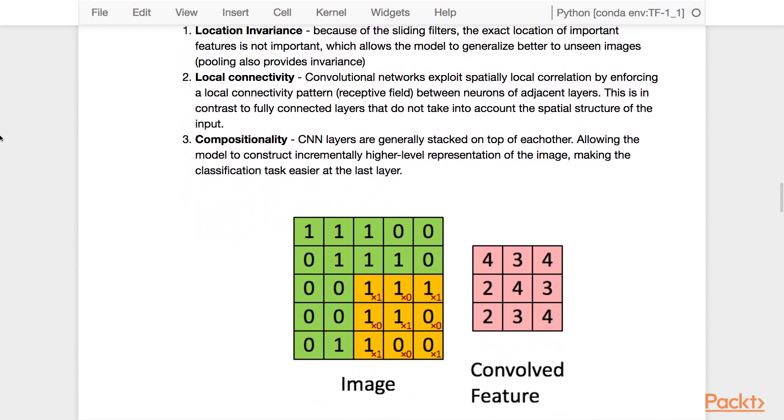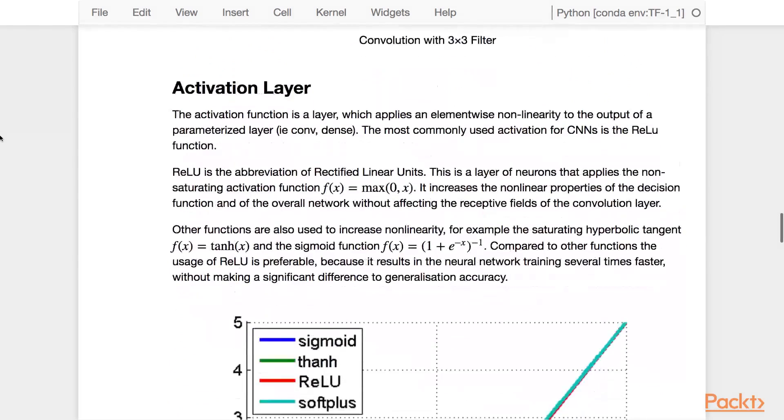In this image, you can see how we can take a kernel of 3x3 and convolve it around an image with a stride of 1, turning an image that is 5x5 into a convolved feature that is 3x3.